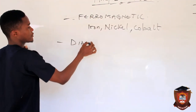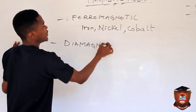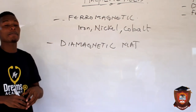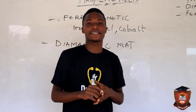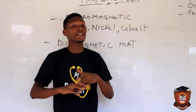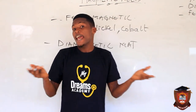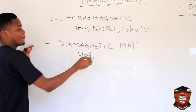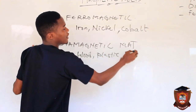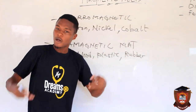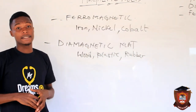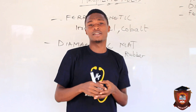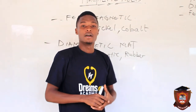In contrast to ferromagnetic materials, diamagnetic materials are those materials which are not attracted by a magnetic field. Examples include wood, plastic, and rubber. The reason they are diamagnetic is that they cannot easily arrange their electrons in the same direction as the spinning magnets — their electron spins are in the opposite direction to that of the magnet.